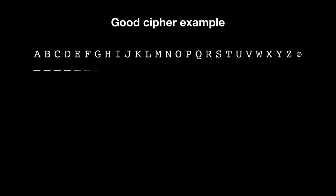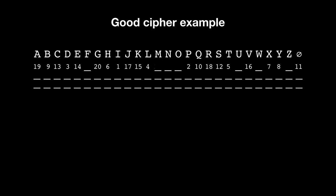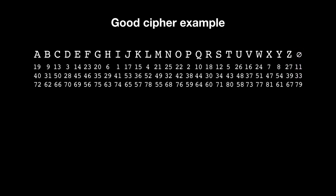To each letter we assign a number randomly, starting with one, two, three, and so on. To each letter we assign three different numbers that will allow the spy to encrypt the same letters differently each time. We also include numbers that have no meaning so that the spy can make the message arbitrarily longer.